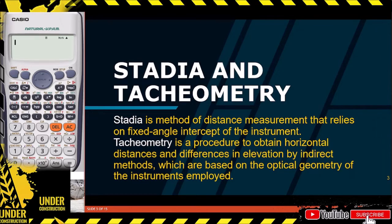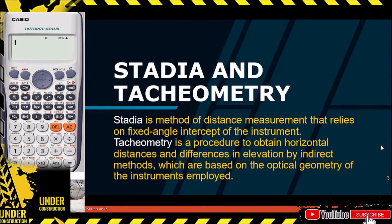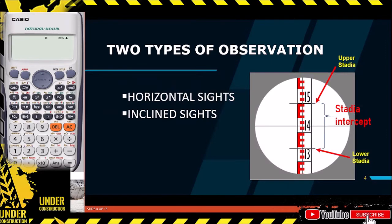Stadia is a method of distance measurement that relies on a fixed angle intercept of the instrument. Whereas Tachymetry is a procedure to obtain horizontal distances and differences in elevation by indirect methods, which are based on the optical geometry of the instruments employed. There are two types of observation in Stadia: horizontal sights and inclined sights.